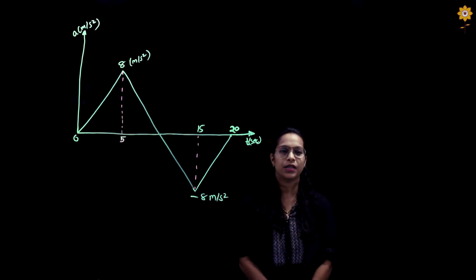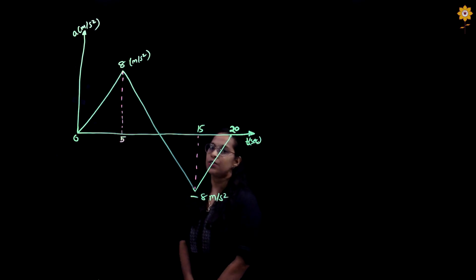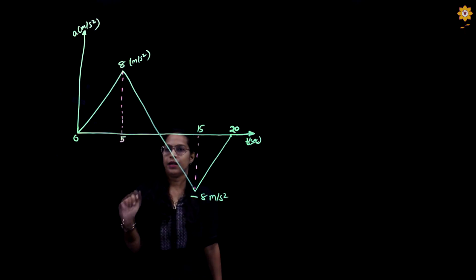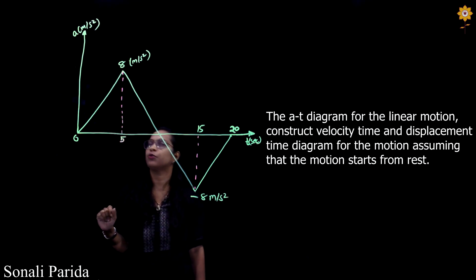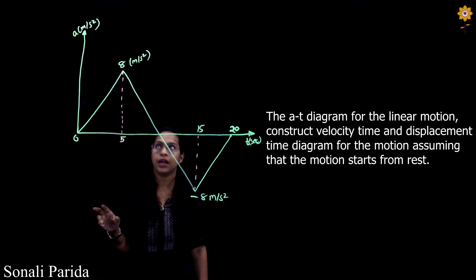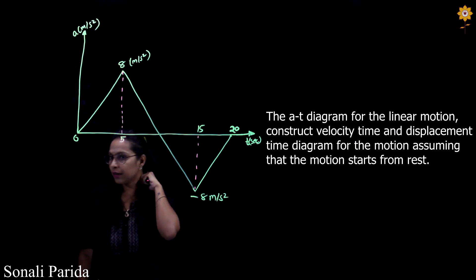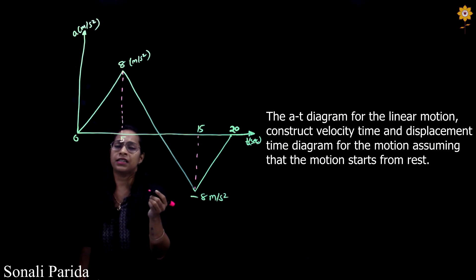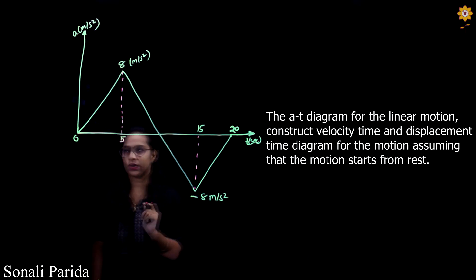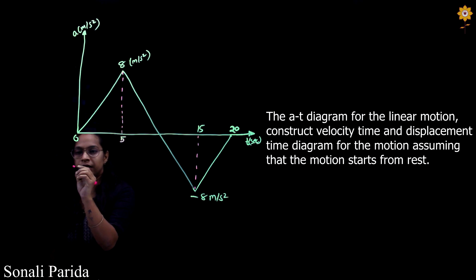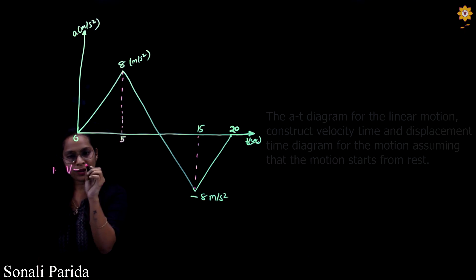Hello everyone. Welcome to MES's e-learning channel. In this lecture today we will be again solving another problem based on motion curves. From this diagram we have to find the VT diagram and the ST diagram, given the AT diagram. So here we have a negative axis in this question. Let us calculate the values for the VT diagram first.